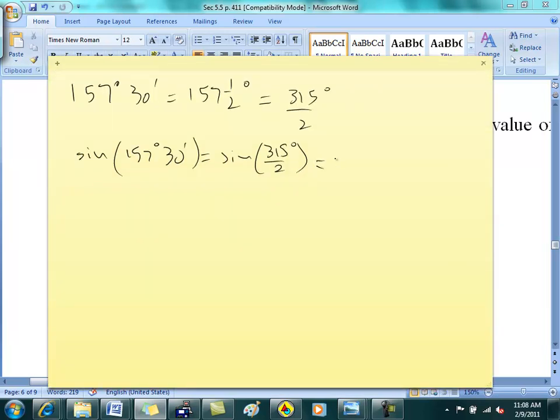Which is going to be equal to plus or minus square root of 1 minus cosine u. What is u in this case? What's u in this case? 315. Is everybody with Janice on this? U is 315. Does anybody need me to explain that? So it's going to be cosine 315 all over 2.